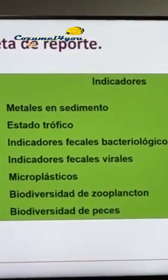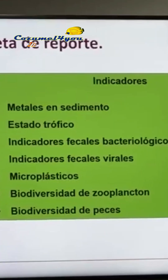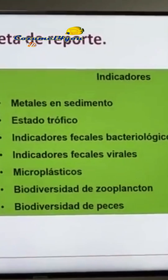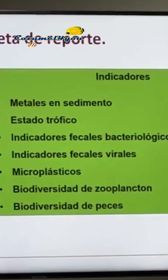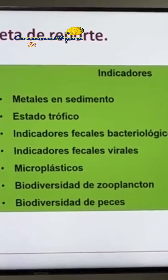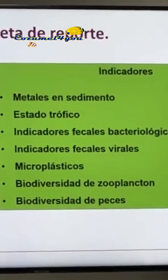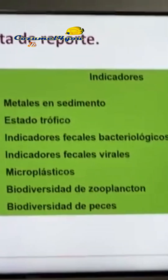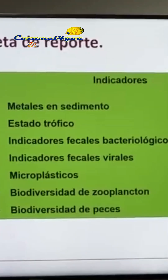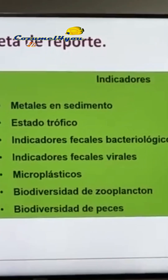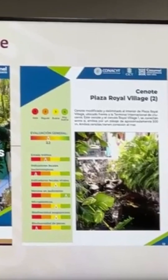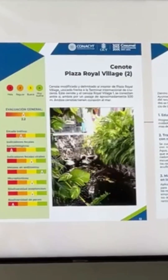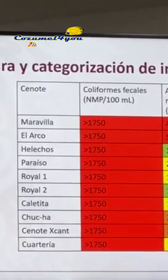The indicators that were included were: 1. Metals in Sediment, 2. Trophic State, 3. Bacteriological Fecal Indicators, 4. Viral Fecal Indicators, 5. Microplastics, 6. Zooplankton Biodiversity, and 7. Fish Biodiversity. The condition status card shows the results for each of the cenotes and what each of the indicators represents.